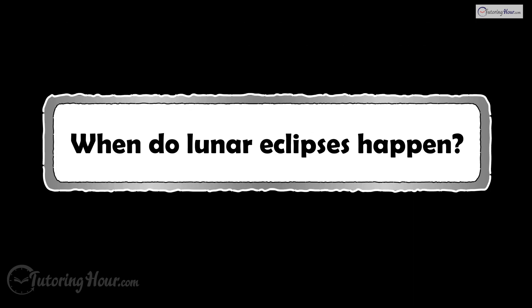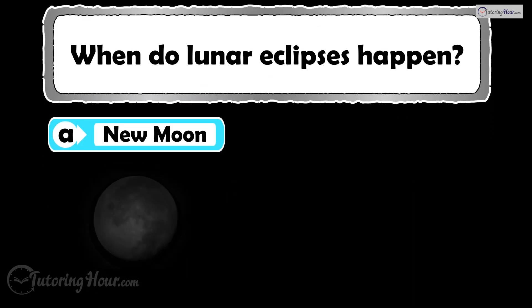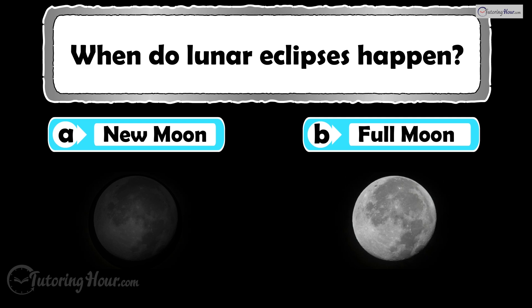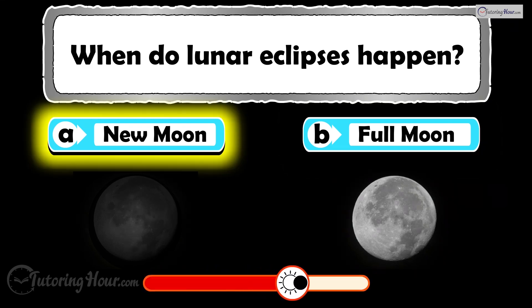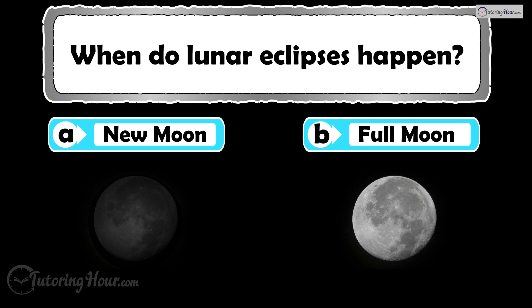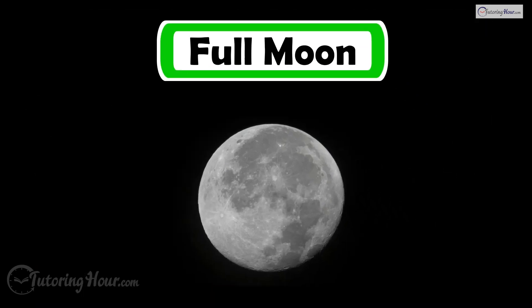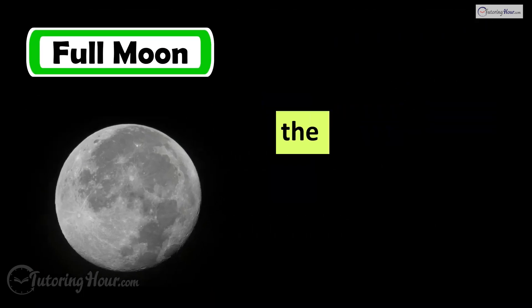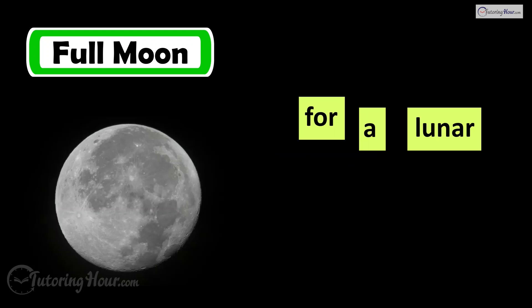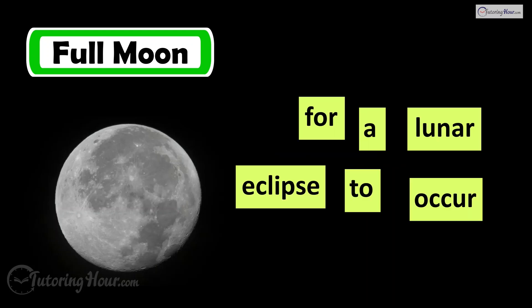When do lunar eclipses happen? Is it A, during a new moon, or B, during a full moon? The correct answer is full moon. The Earth must be between the sun and the full moon for a lunar eclipse to occur.